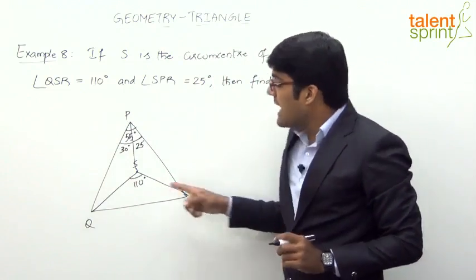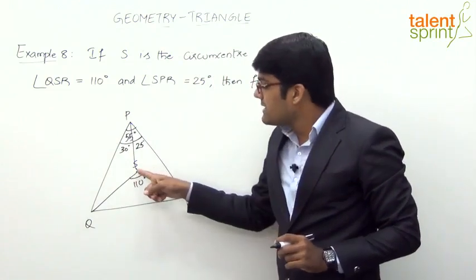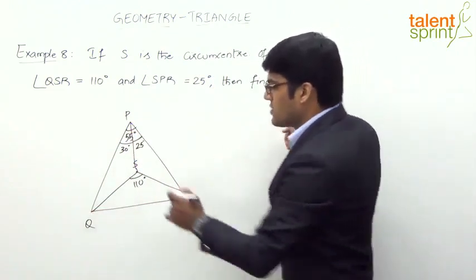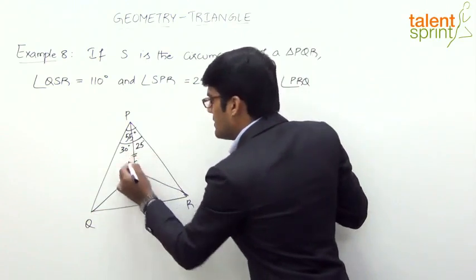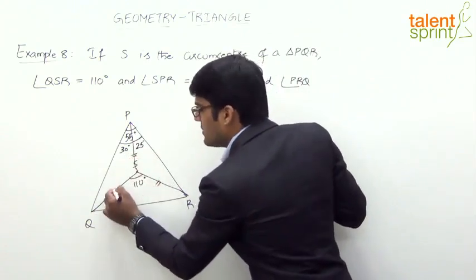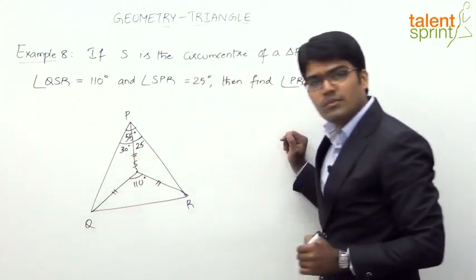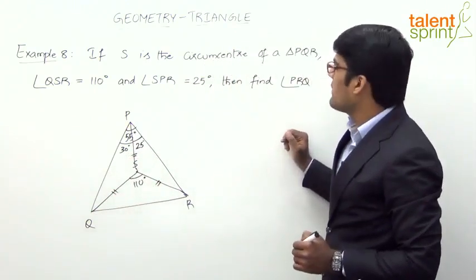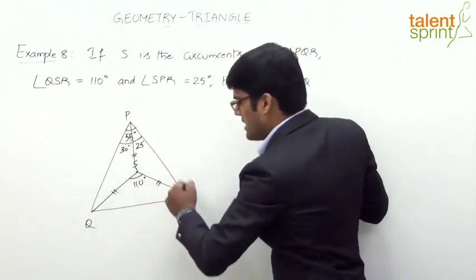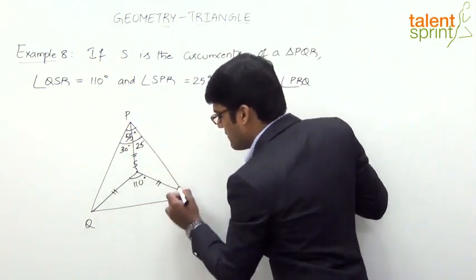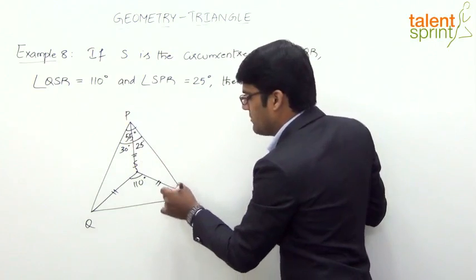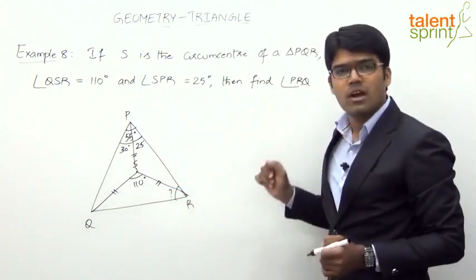We know that the circumcenter is equidistant from all three vertices, so SP equals SR equals SQ. The requirement of the question is to find angle PRQ, so we need to find this total angle PRQ.